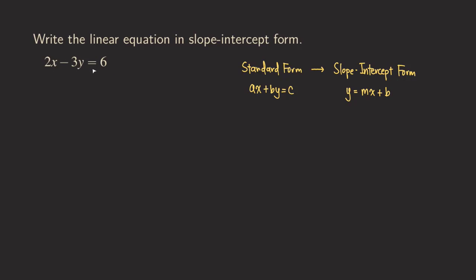As you can see that this equation is in the standard form. The standard form looks like AX plus BY is equal to C. And so as you can see that the A is a 2, the B is the negative 3, and then the C is a 6. So that is the standard form.